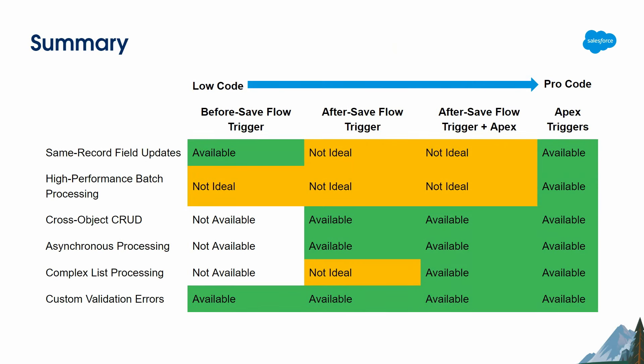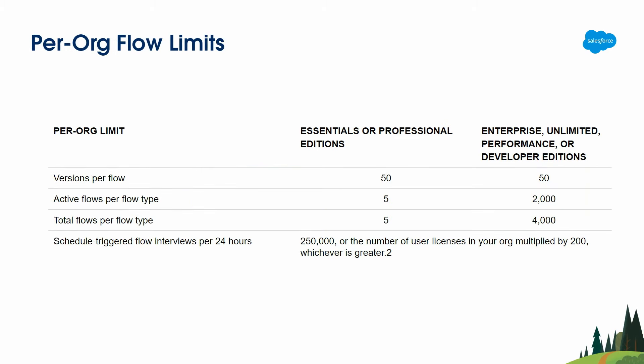Here is a recap of the comparison we covered. We don't have enough time to go into full detail, so please take a picture if you'd like to review it later. We also have some org flow limitations to keep in mind — for example, versions per flow and how many active flows per type are allowed. Take a picture of this slide and learn more about flow limitations later.